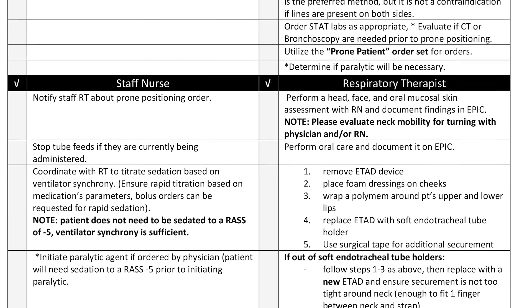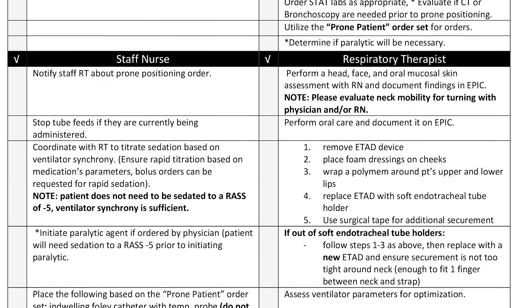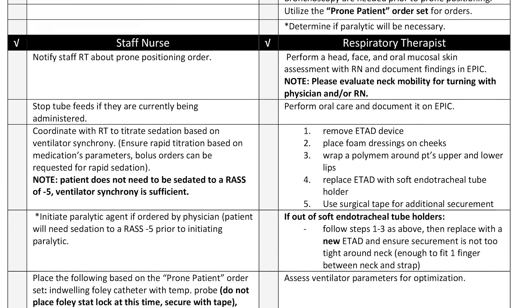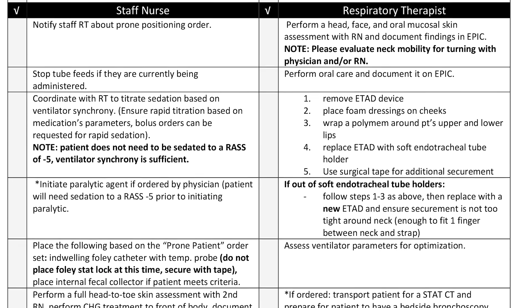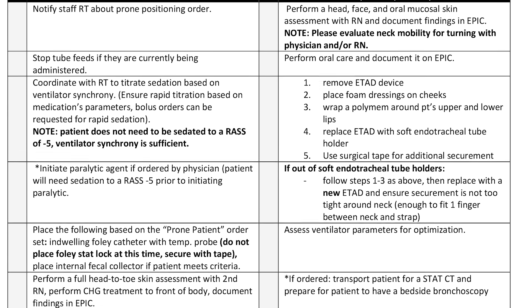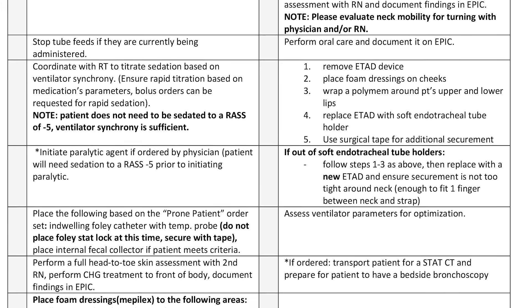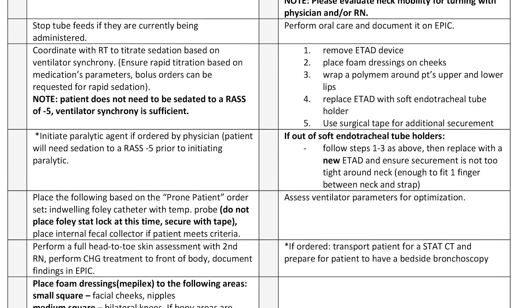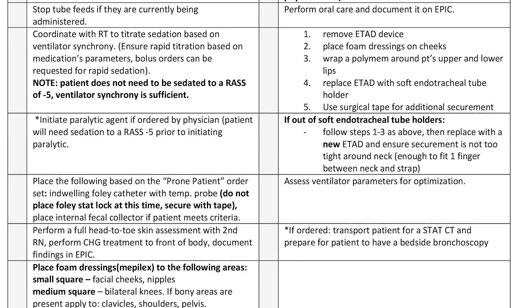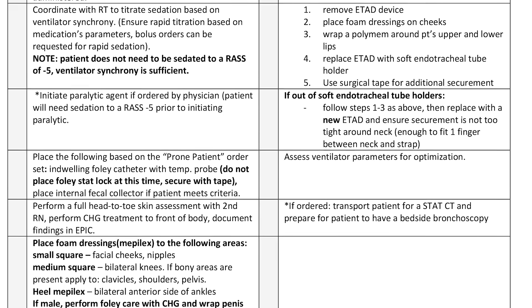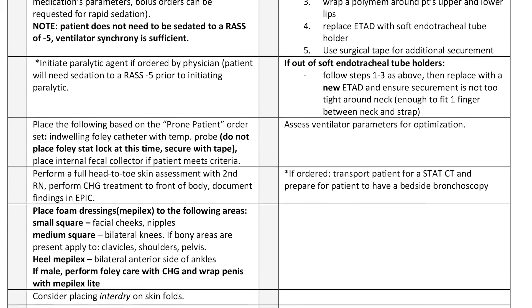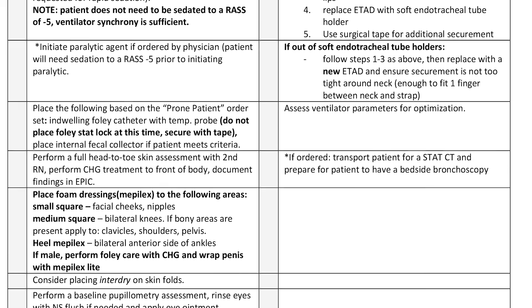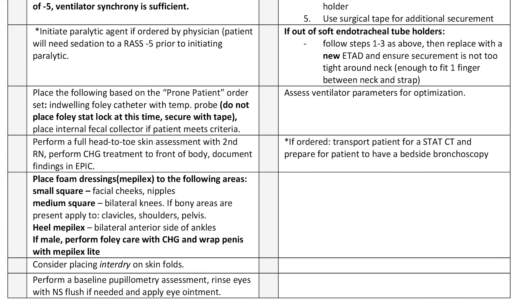The patient should be sedated according to ventilator synchrony. If the patient is sedated to a RASS of negative 5 and continues to display dyssynchrony, a paralytic can then be administered. A head-to-toe skin assessment should be completed, documented, and foam dressings placed on bony prominences. Neck mobility should be assessed and a new endotracheal tube holder placed, with foam dressings under the holder on the cheeks to give added skin protection.